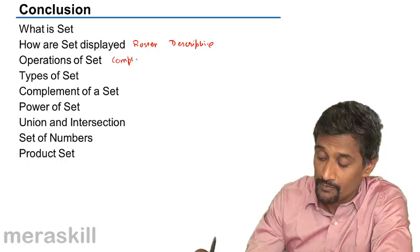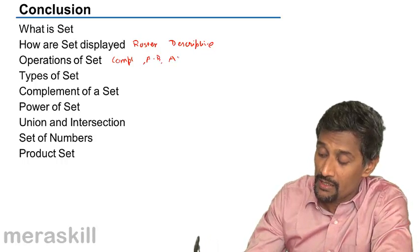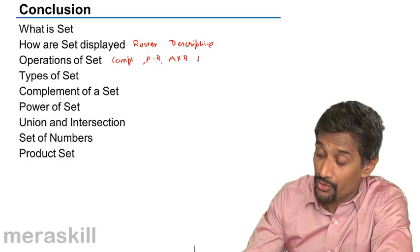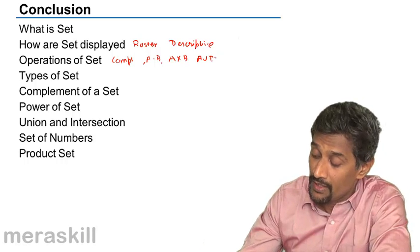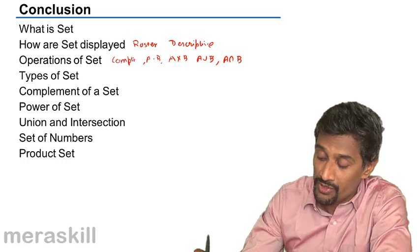A minus B, A cross B, A union B, A intersection B - all the various operations were done.